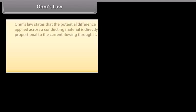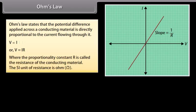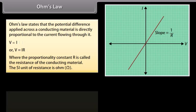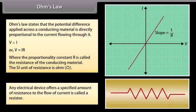Ohm's Law states that the potential difference applied across a conducting material is directly proportional to the current flowing through it: V is directly proportional to I, or V = IR, where the proportionality constant R is called the resistance. The SI unit of resistance is ohm. Any electrical device that offers a specified amount of resistance to the flow of current is called a resistor.